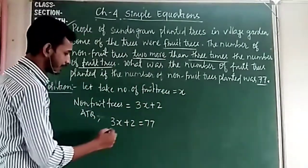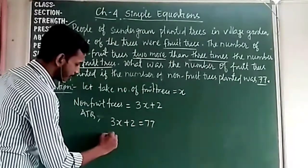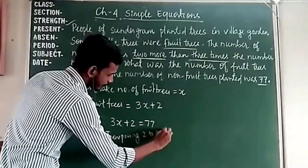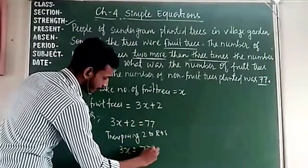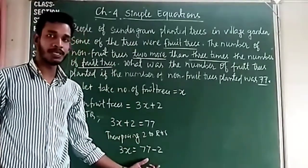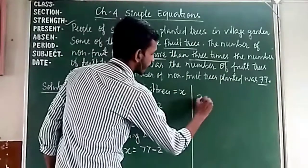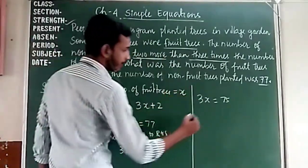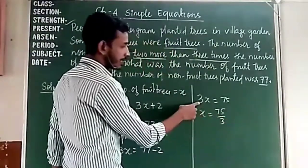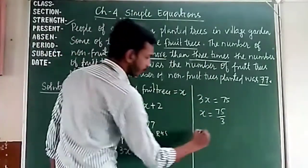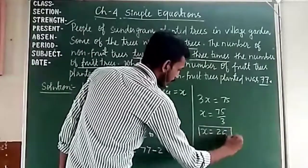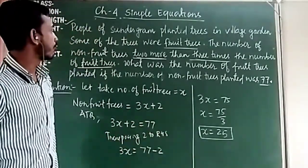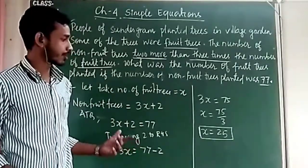Now we solve this. On transposing 2 to the right-hand side, we get 3x equals 77 minus 2, which is 75. Now transferring 3 to the right-hand side as division: x equals 75 divided by 3, which is 25. So the number of fruit trees planted in the village garden was 25.